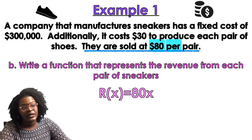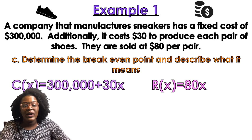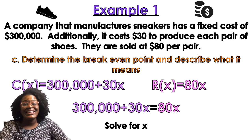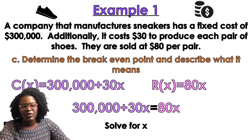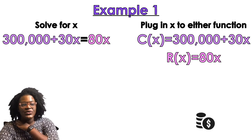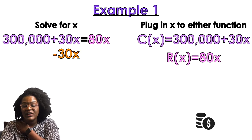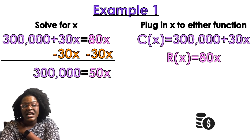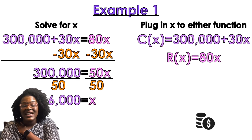Part C is the hard part: determine the break-even point. I have two functions — C for cost and R for revenue. To find the break-even point, I set them equal to each other, because 'break-even' means equal. So: 300,000 + 30x = 80x. I get both variables on the same side: subtract 30 from both sides, that gives me 300,000 = 50x. Divide both sides by 50 — I get x = 6,000.